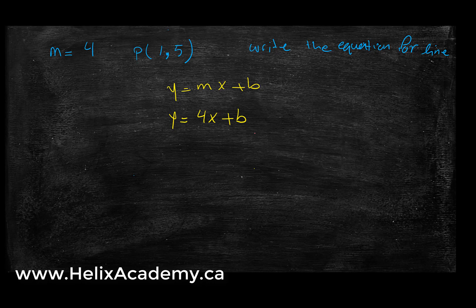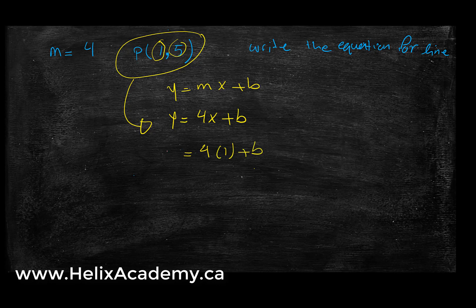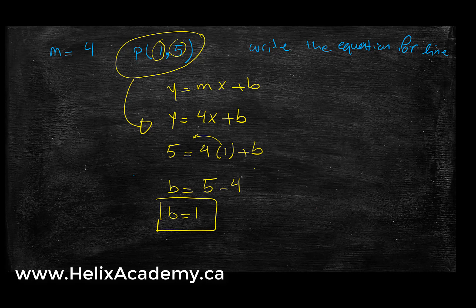My equation looks like y equals mx plus b. My m value is given as 4, so it's going to look like y equals 4x plus b. My only job now is to find b. I know that the point (1, 5) is on this line, meaning if I substitute x for 1, I should get y equals 5. So: 5 equals 4 times 1 plus b, which gives b equals 5 minus 4, so b equals 1.